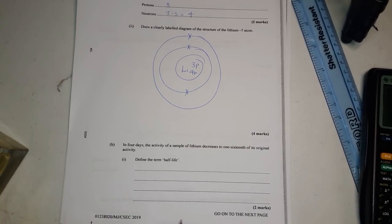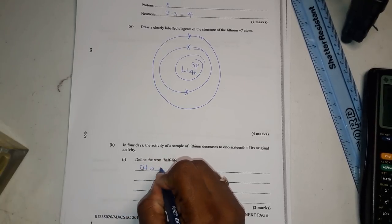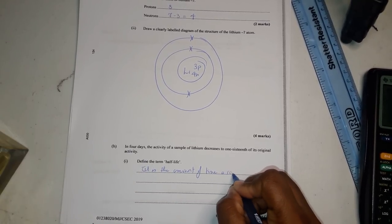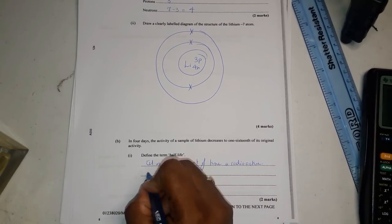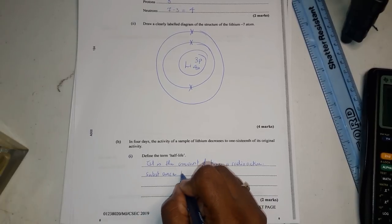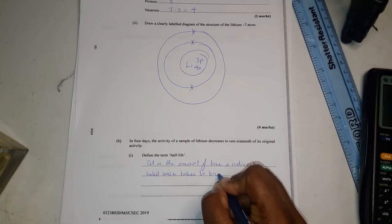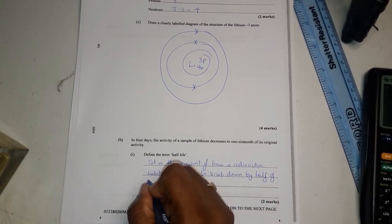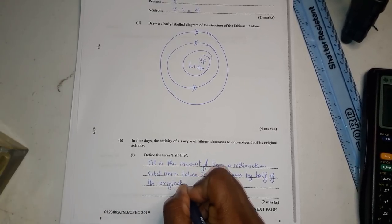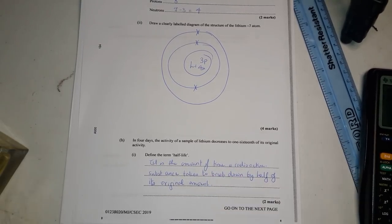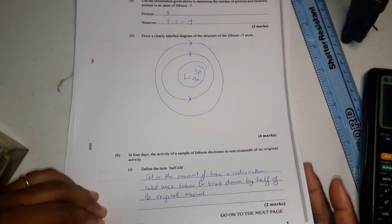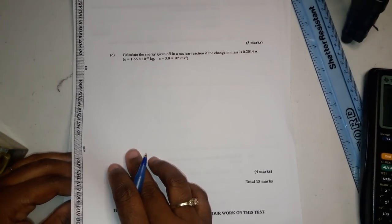In four days the activity of a sample of lithium decreases to one sixteenth of its original activity. Determine the term half-life. It is the amount of time a radioactive substance takes to break down by half of its original amount.